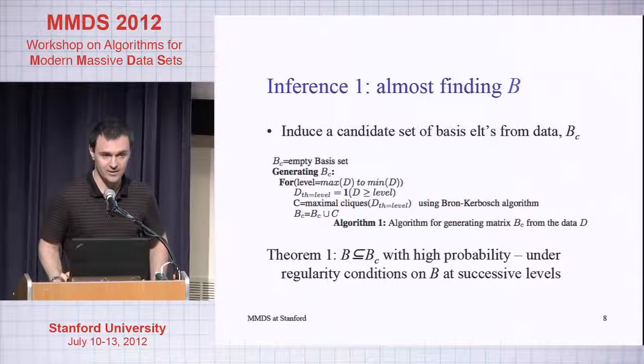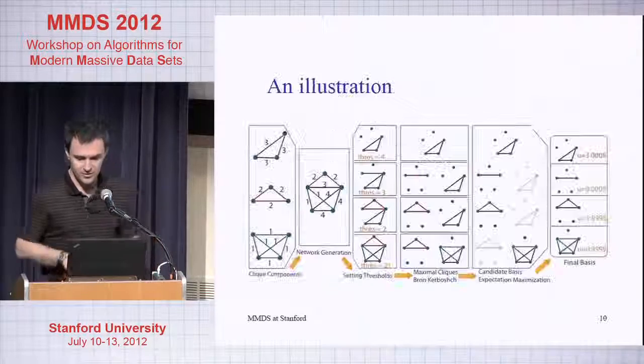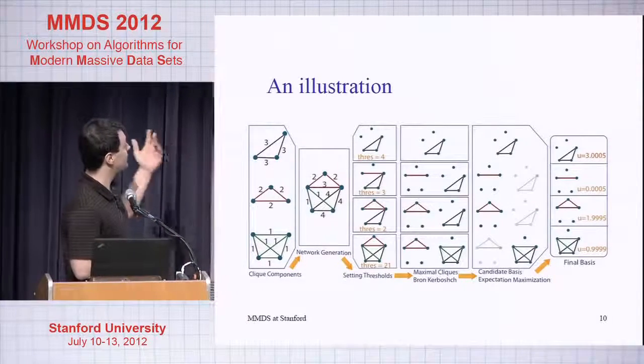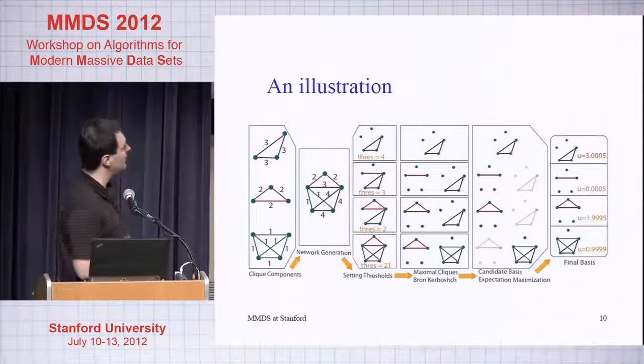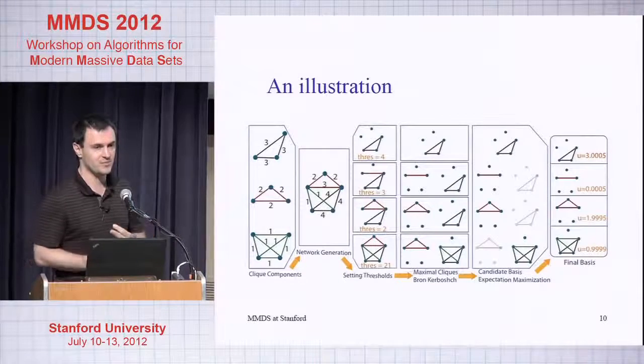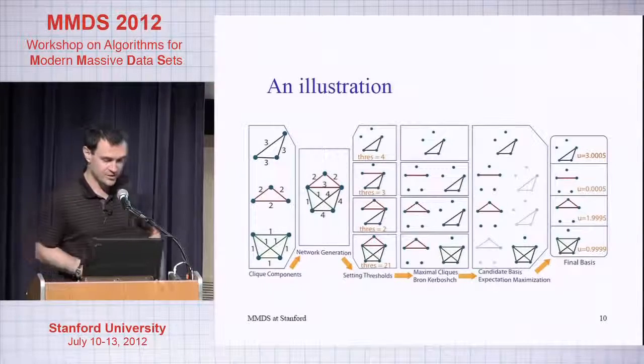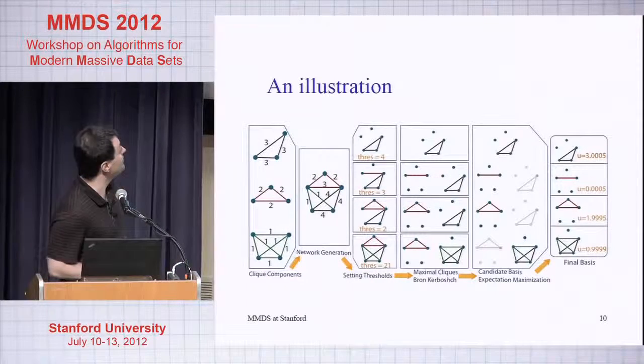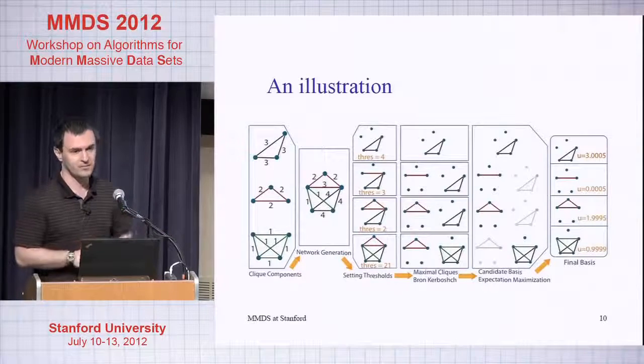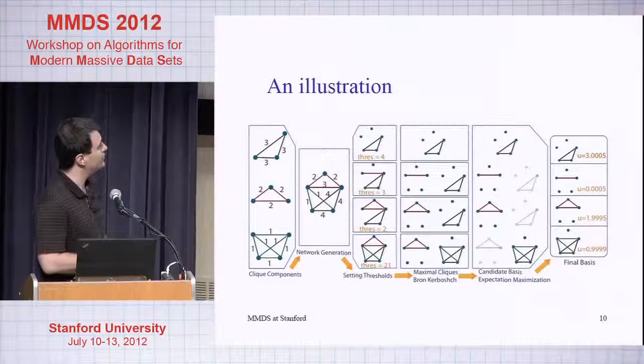Then I'm going to do maximum likelihood estimation. Here's an illustration. On the left hand side I start with three cliques. There's a number of messages. Let's say that people in these cliques exchange one message in the green clique, two messages in the red clique, and three messages in the blue clique. So that's generating some data from my model. I put them all together so what I would observe is this graph over here.